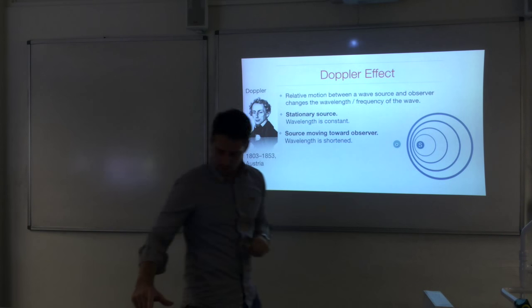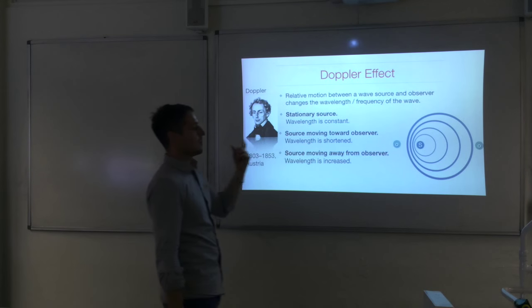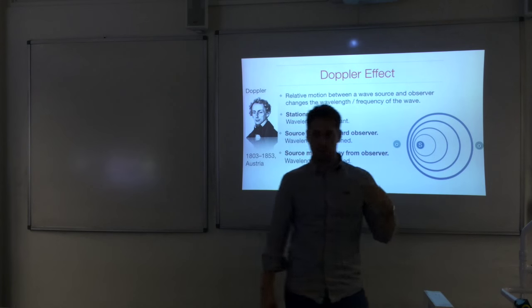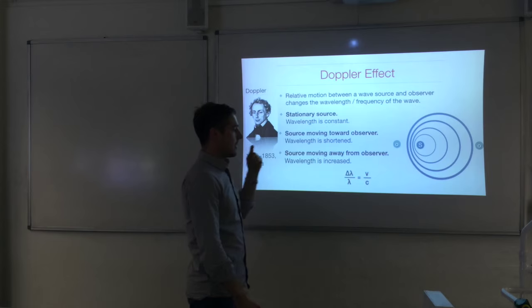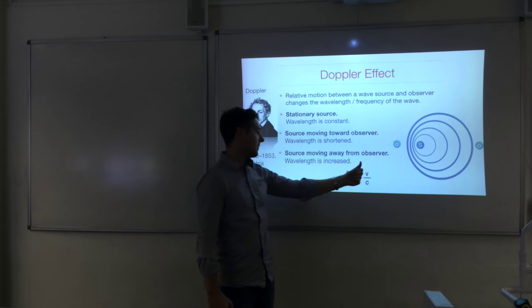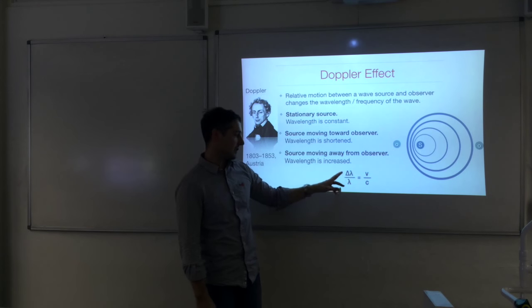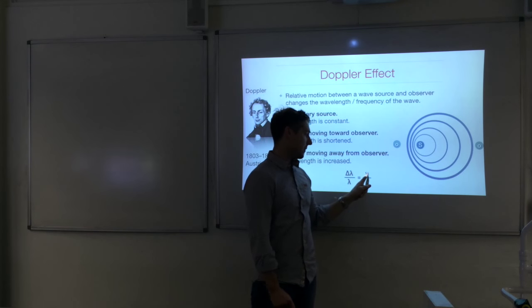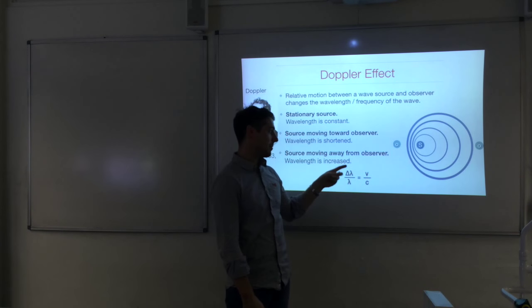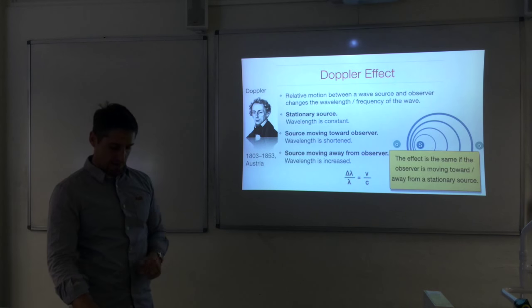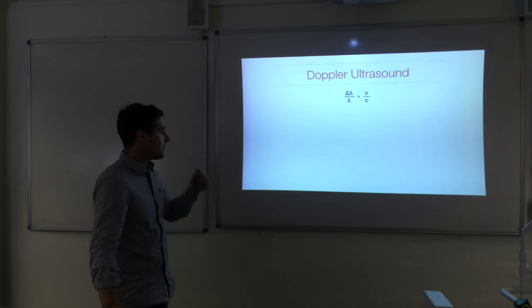Behind the moving source, the wavelength is increased and the frequency is lower. The equation relating these quantities is: delta-lambda over lambda equals v over c, where delta-lambda is the change in wavelength, lambda is the original wavelength, v is the speed of the source or observer, and c is the speed of the wave. The effect is the same whether the source or the observer is moving toward or away from the other.